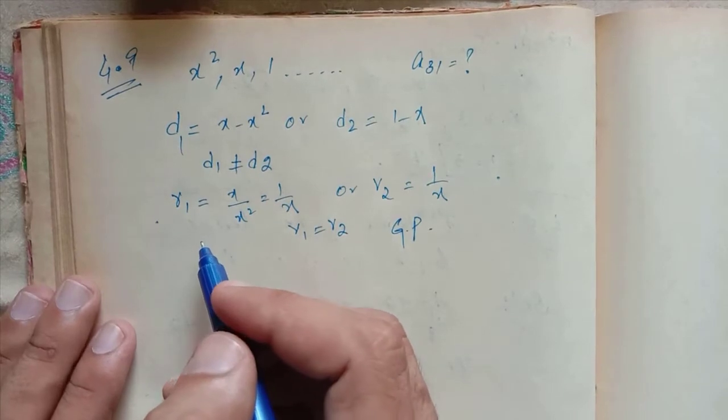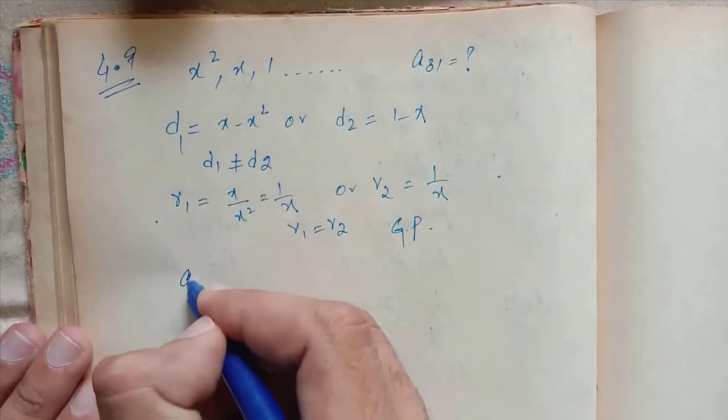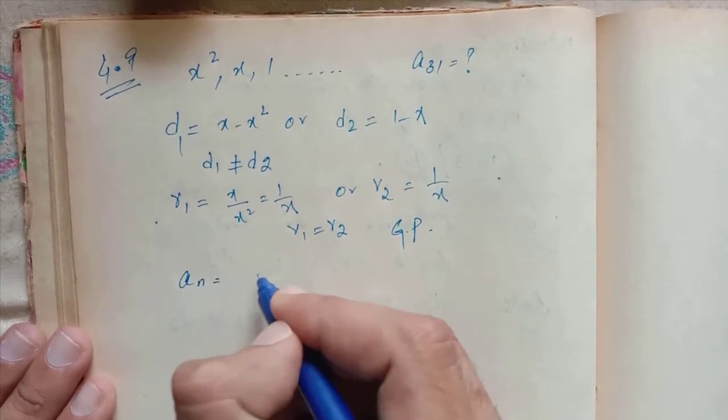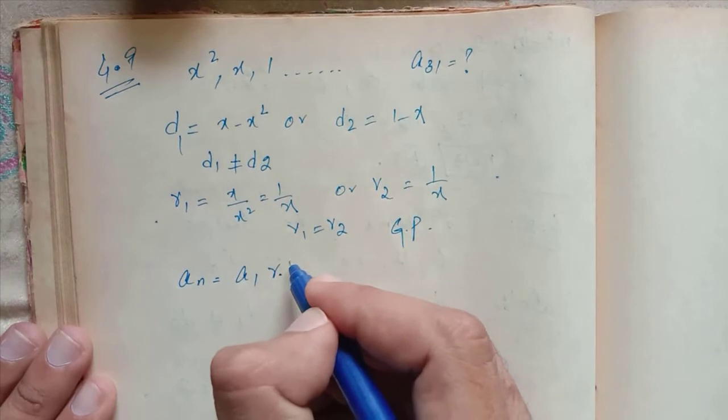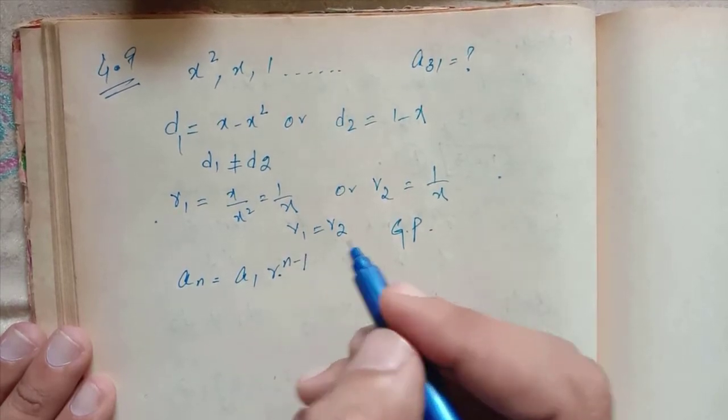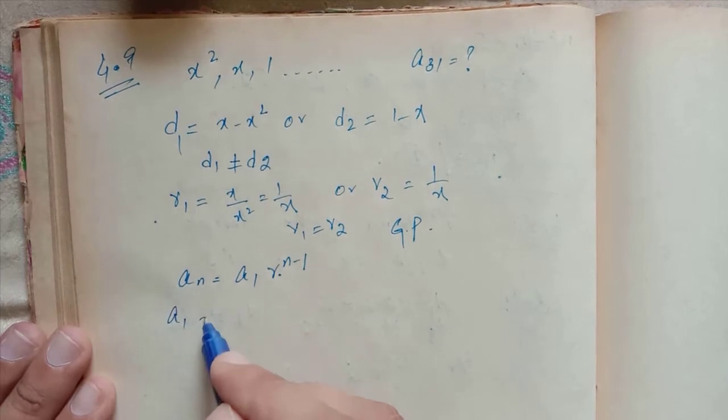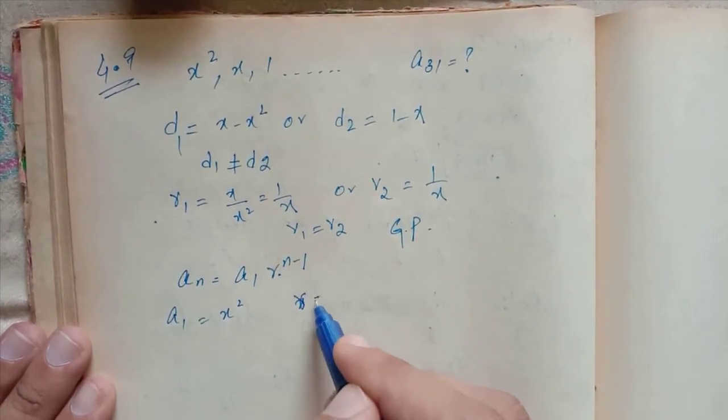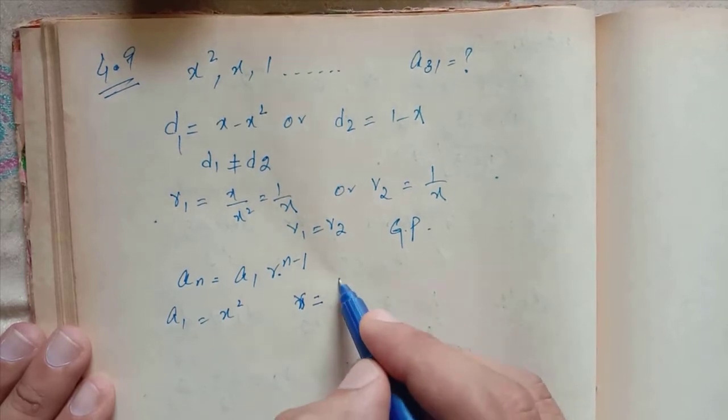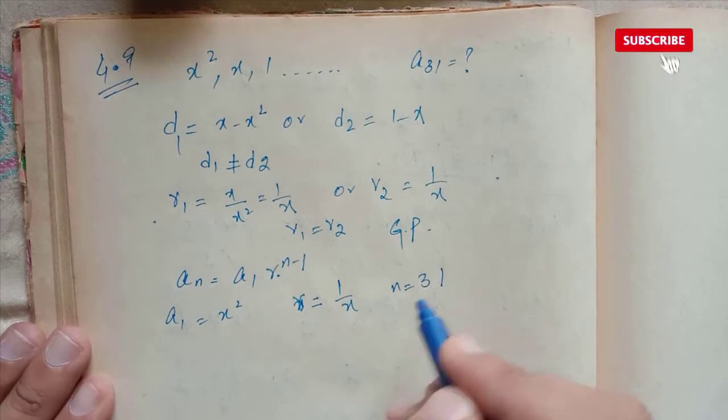Now the formula of geometric progression is an = a1 × r^(n-1). So a1 = x², r = 1/x, and n = 31.